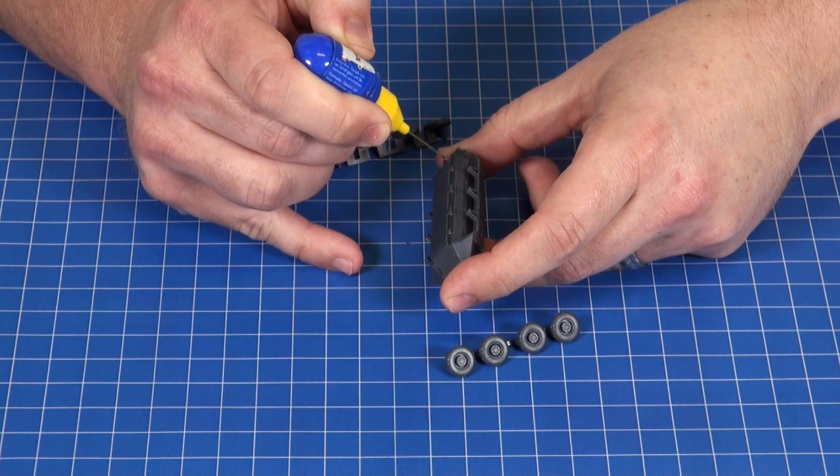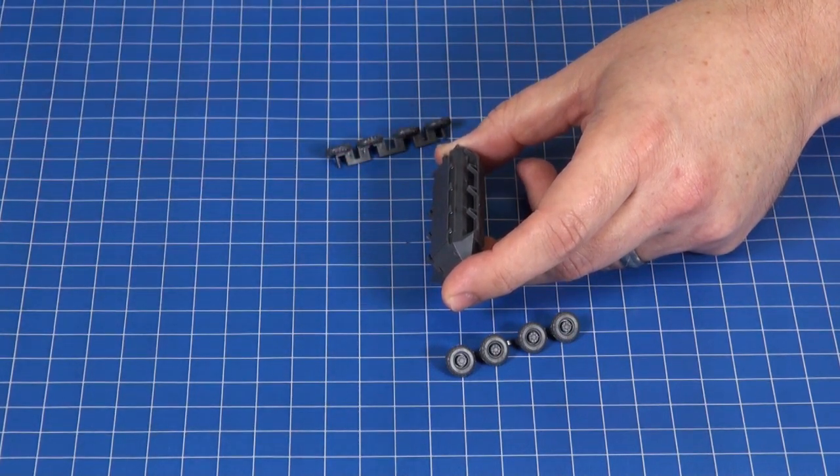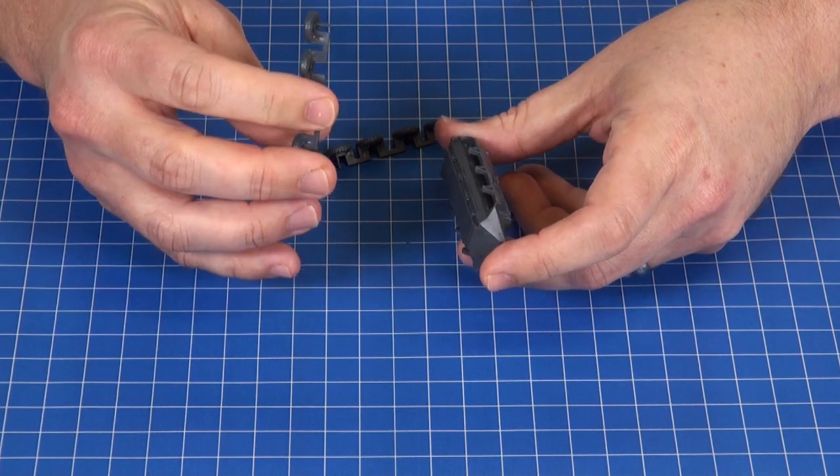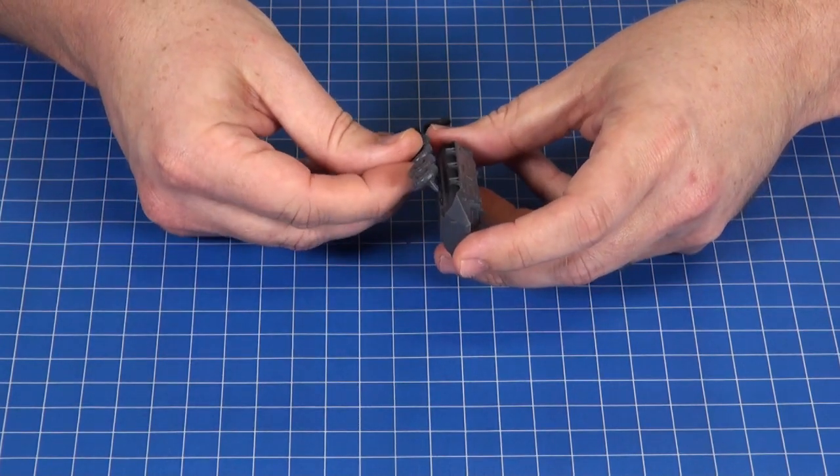They come in sets of four, so all you need to do is glue in the left hand set and then the right hand set. These are keyed so that they'll only go on the correct side.